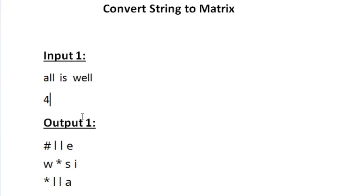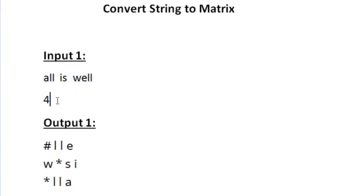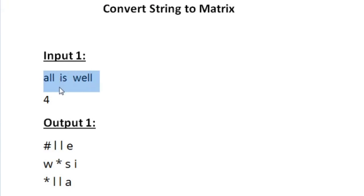We don't know how many rows would be present, but if every row can have 4 characters then the number of rows required would be the string length divided by the number of columns. So when we divide the string length of the given input string by 4 and obtain the ceiling value, that would be the number of rows required. The string length is 11, so 11 divided by 4 is 2-point-something, and when we take the ceiling the value becomes 3. So the number of rows required here is 3.